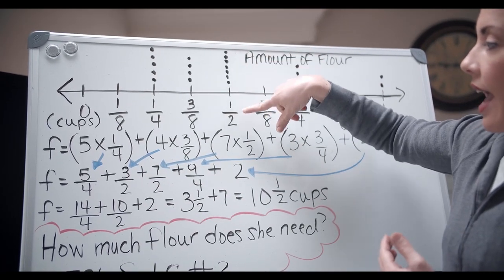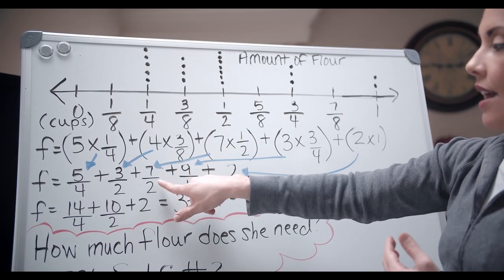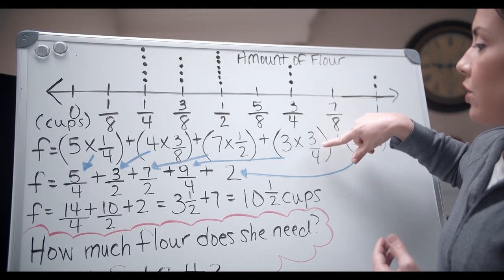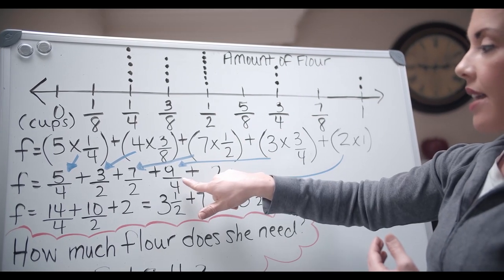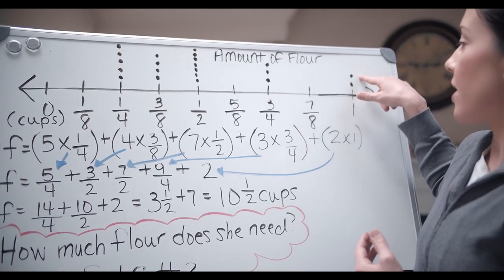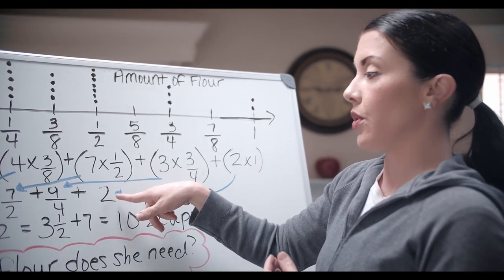Next, I had seven dots at a half. So seven times one half, and that equals seven over two. Next is three times three quarters. And that gives me nine over four. And lastly, I have two dots all the way over here at one. So two times one is two.